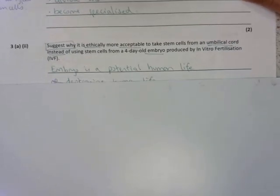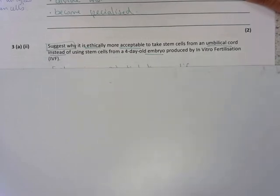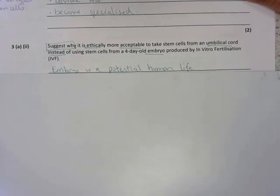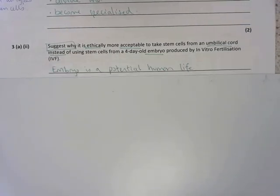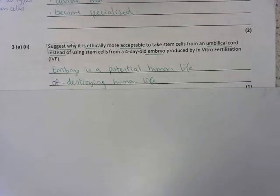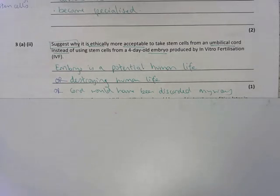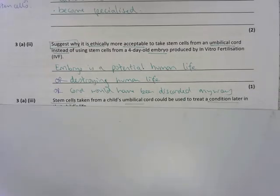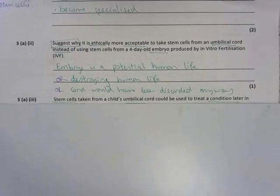Question 3AII. Why is it more acceptable to take stem cells from an umbilical cord instead of using stem cells from an embryo produced by IVF? Well, remember, an umbilical cord is very different to an embryo because an embryo is a potential human life, and that's where you get the mark. So you could say it's a potential life, you could say you'd be destroying a human life. Or the other way you could phrase it is the cord, the umbilical cord, once the baby is born, it doesn't need it. So it would have been discarded or thrown away anyway. So using it is more acceptable ethically. Whenever you see the word ethics, you need to think potential human life when it comes to embryos and stem cells.